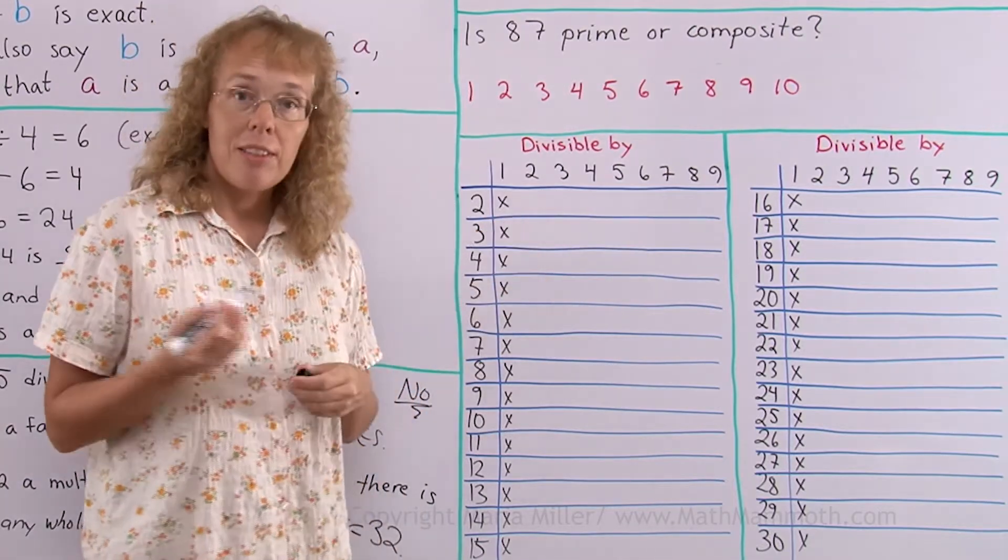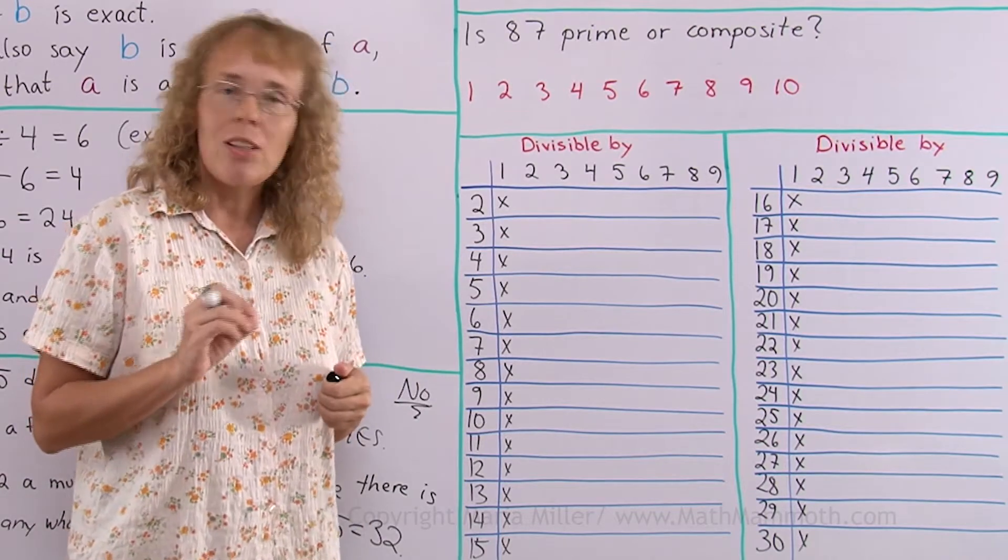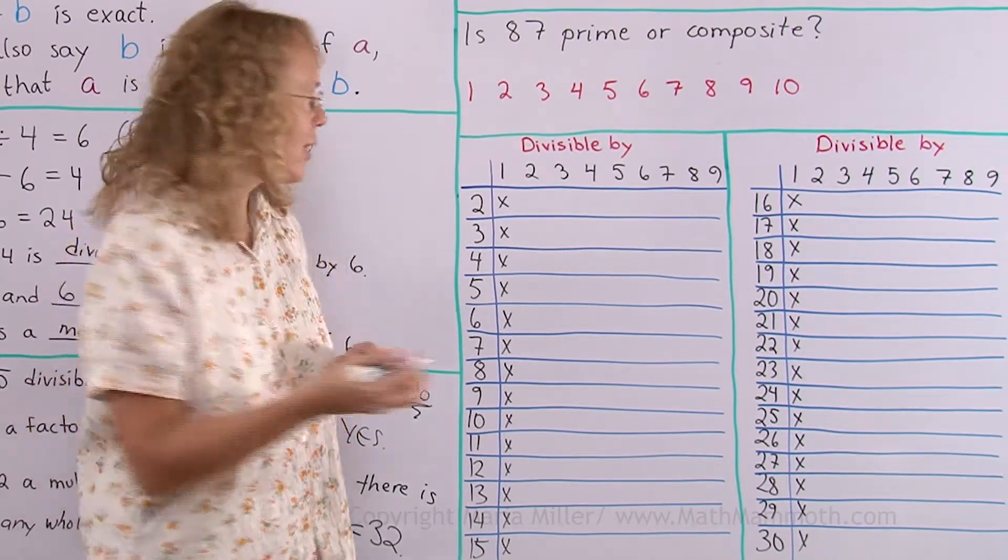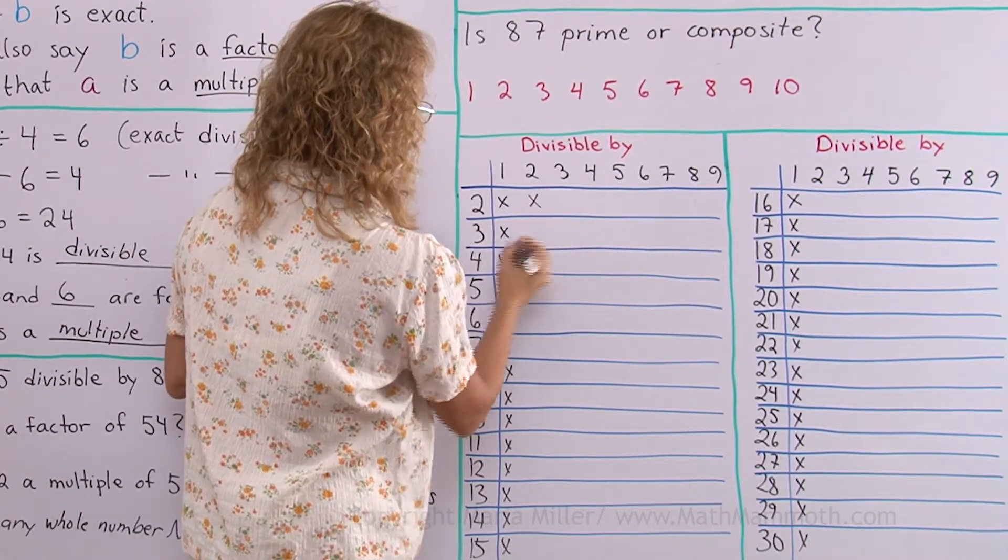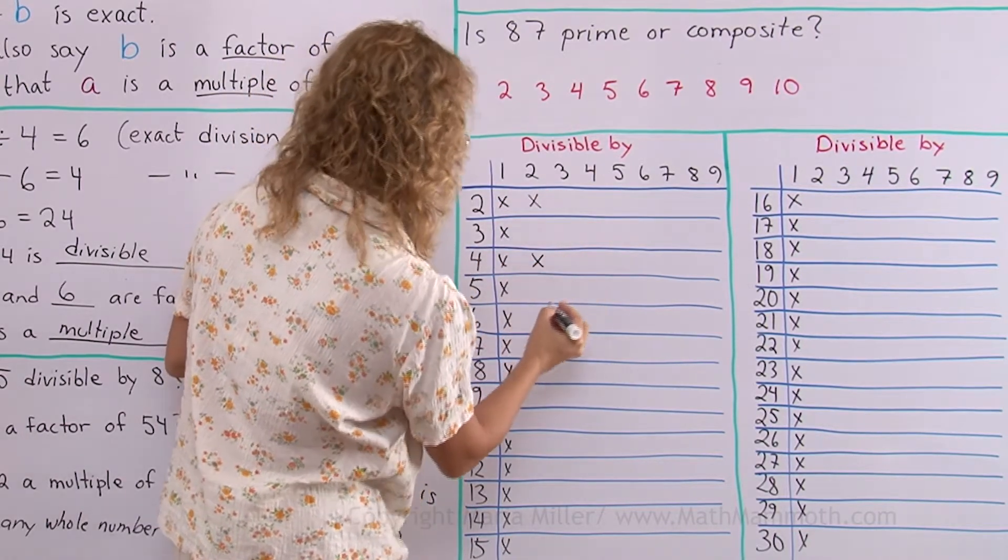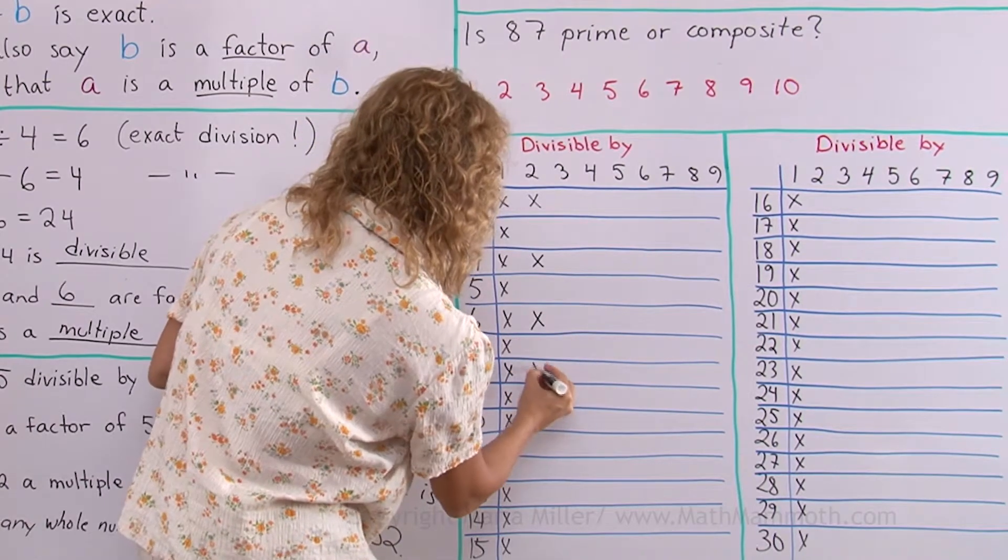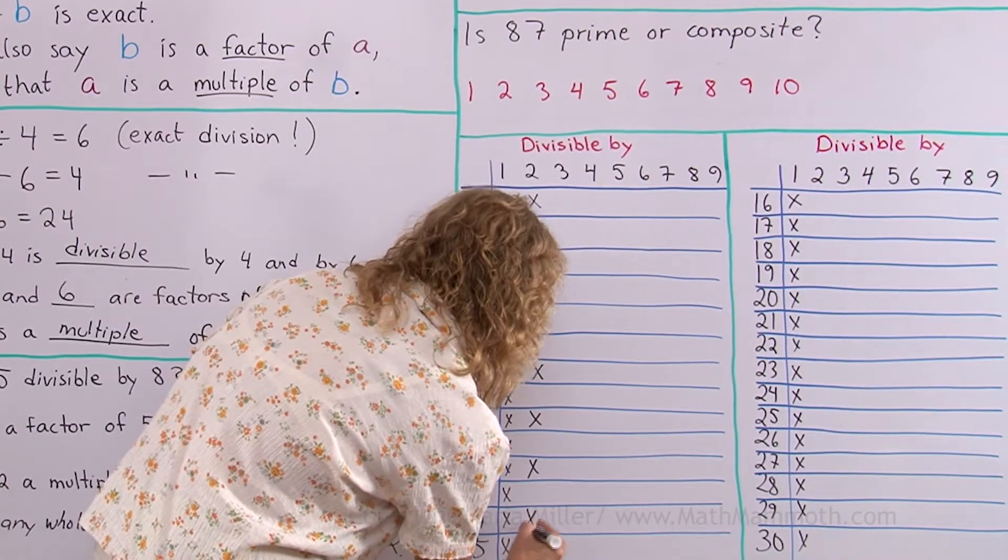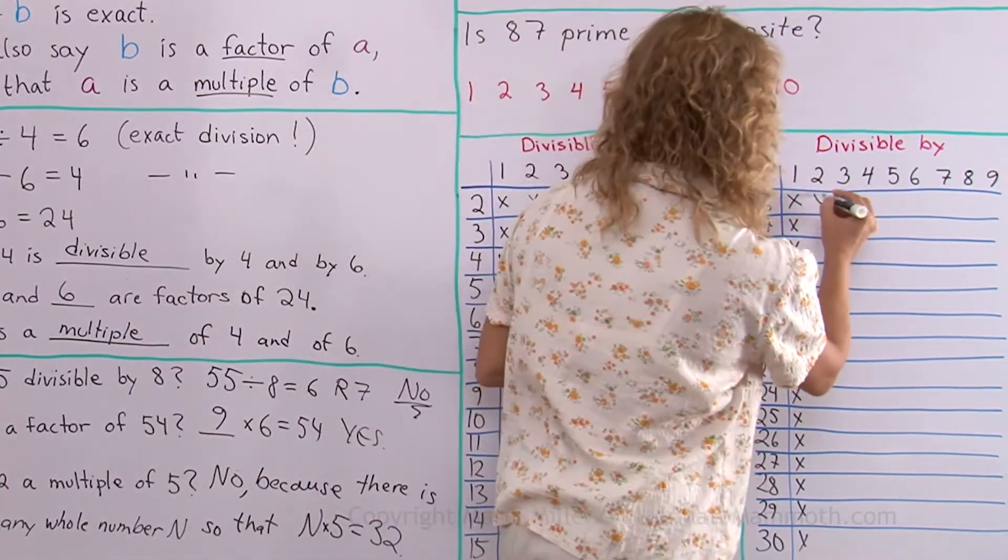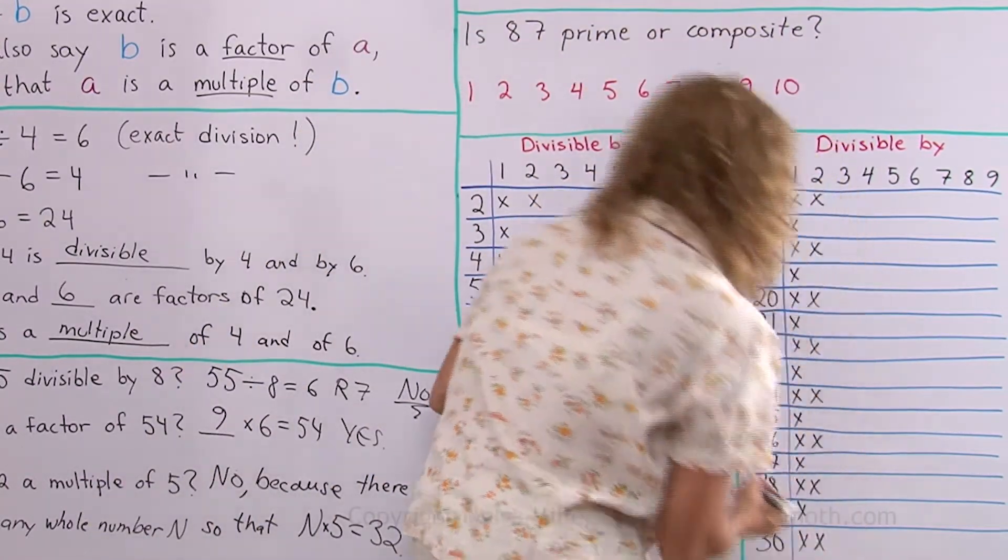If I think of numbers that are divisible by 2, those are your even numbers, right? 2, 4, 6, 8. So 2 here is divisible by 2, 3 is not, 4 is divisible by 2, and every other number here in my list is divisible by 2. It's my even numbers.